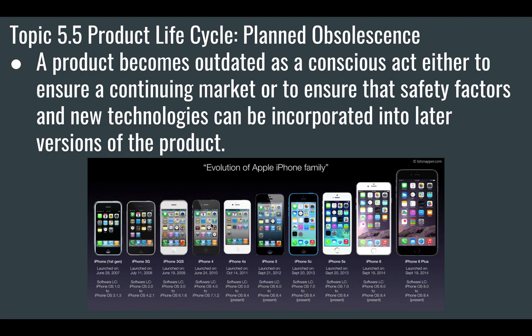Once people are in the Apple universe — Apple computer, iPhone, iPad — when their phone becomes obsolete, they're going to buy the latest Apple phone, keeping their money within Apple. That's Apple's plan: to make sure you continue buying their phones. If an iPhone 4 stayed good for 20 years, Apple would quickly go out of business. They basically plan to make the phone obsolete so you'll buy the latest models.